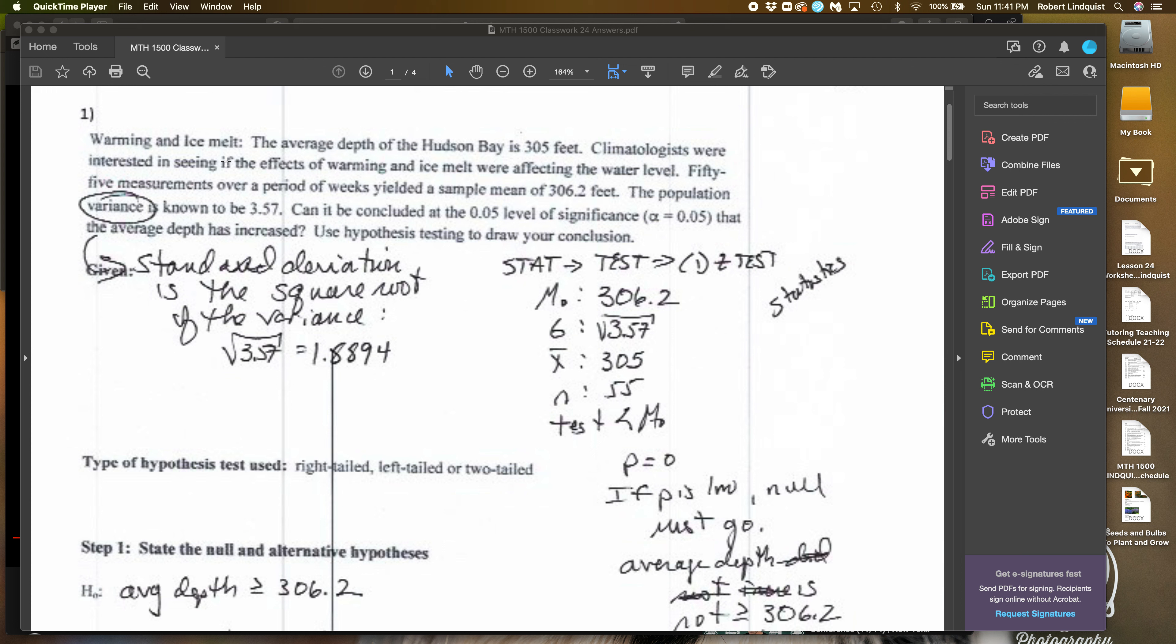Population variance is known to be 3.57. Can it be concluded at the 0.05 level of significance, that is to say alpha is 0.05, that the average depth is increased? Use hypothesis testing to draw your conclusion.